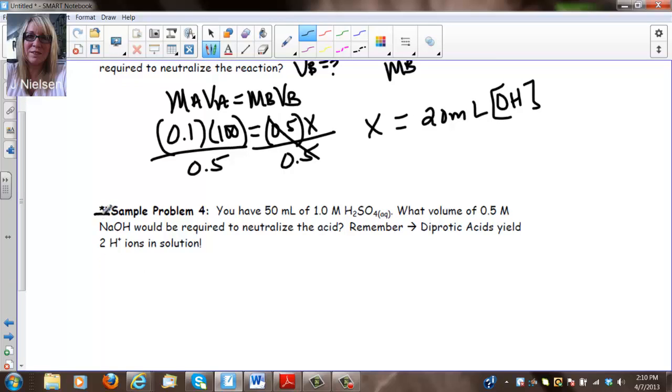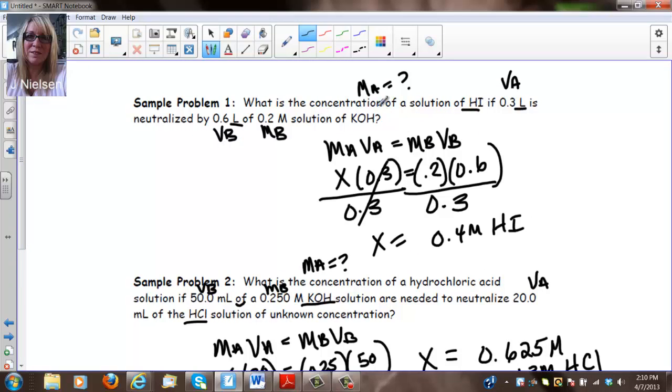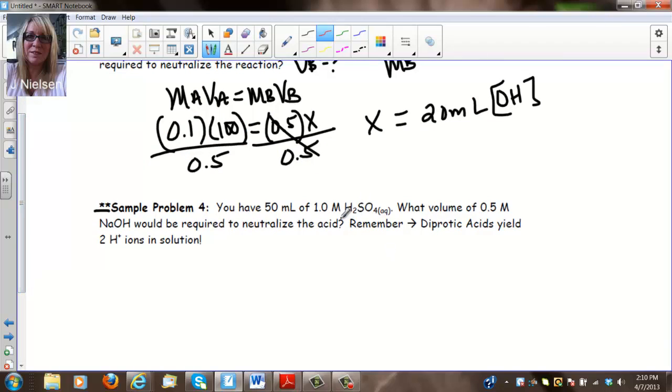This problem has a star because there's a type of problem that you really have to watch out for. I'm going to go back and notice that in this problem we had a monoprotic acid. We had a monoprotic acid and a monohydroxy base. So my H to OH was 1 to 1. Here I had a monoprotic acid and a monohydroxy base. My OH and my H were 1 to 1. In this problem I have H2SO4 and NaOH. So my ratio of H to OH is 2 to 1. So we have to compensate for that in our problem.